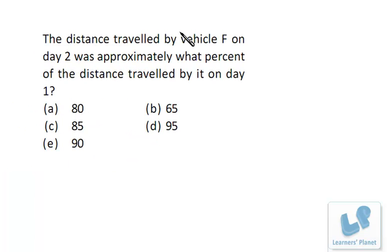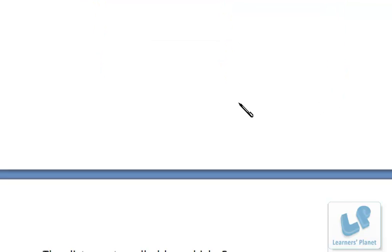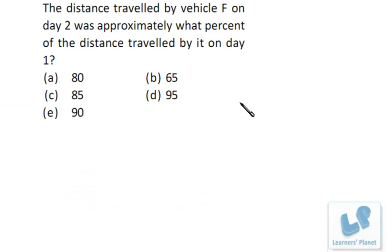Now, the distance traveled by vehicle F on day two was approximately what percent of distance traveled by it on day one? Vehicle F - day one it is 703, day two it is 636. So we have to find out 636 by 703.